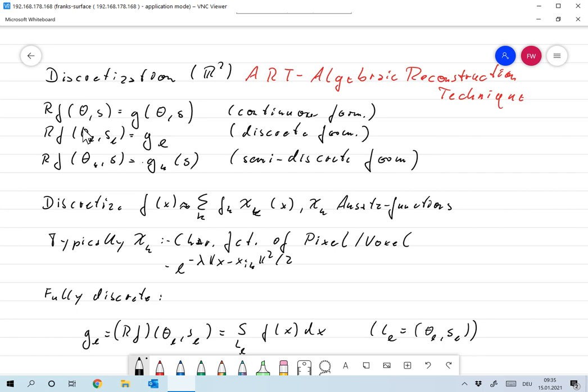for the form of the problem for the Radon transform, we're looking for a function F such that RF is G with continuous parameters theta and S.